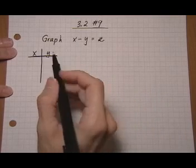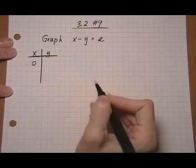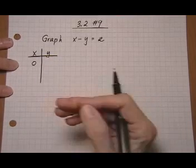Let's start off by choosing zero for x and then finding the y that goes with that, and that will be one ordered pair.